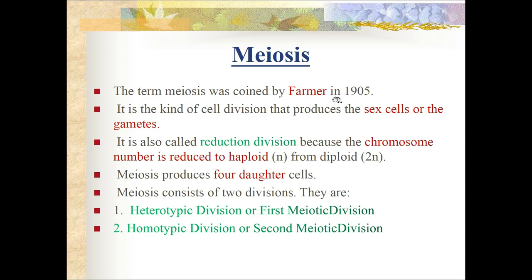Meiosis: the term was coined by Farmer in 1905. It is a kind of cell division that produces sex cells or gametes. It is called reduction division because the chromosomal number is reduced from diploid (2N) to haploid (N). Meiosis produces four daughter cells - unlike mitosis which produces two. Meiosis consists of two divisions: heterotypic division (first meiotic division) and homotypic division (second meiotic division).